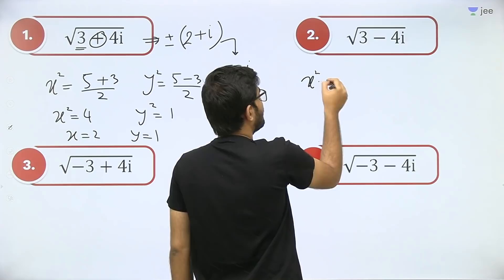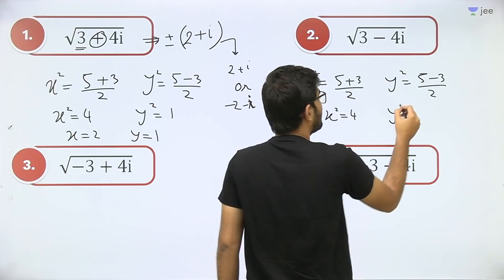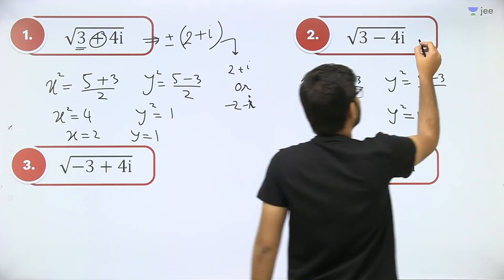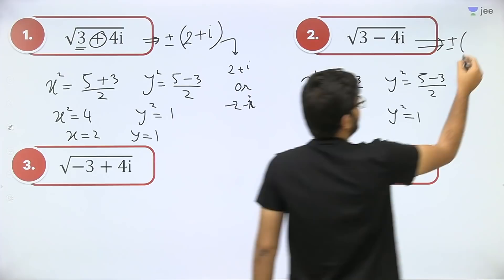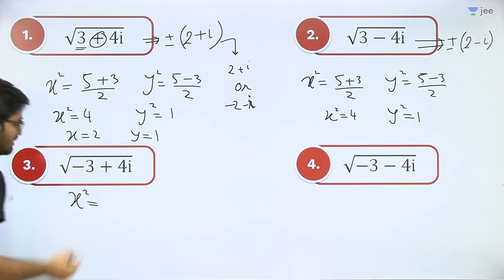Let's do one more question — similar type. Again x² = (5 + 3) / 2 = 4, and y² = (5 − 3) / 2 = 1. Now what is the sign in between? It's a minus sign. If there's a minus sign in between, then we also write ± and minus in between. So the answer is ±(2 − i).